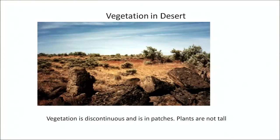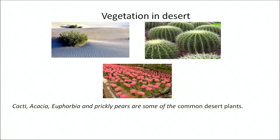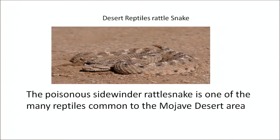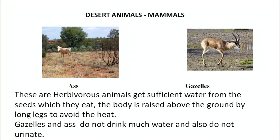The vegetation in deserts is very scarce with lots of rocks in between. Common desert plants include cacti, acacia, euphorbia and similar species. Desert animals can absorb water through their skin, and thorns on their body increase surface area for absorption. The armadillo lizard and the armadillo spiny-tailed lizard are well suited for these climatic conditions. The poisonous sidewinder rattlesnake is one of the common reptiles found in the Mojave Desert area. Some birds can drink water from their feathers. Herbivores in the desert get sufficient water from the plants they feed on. Gazelle and ass do not drink much water and do not urinate much, to retain water in their bodies.